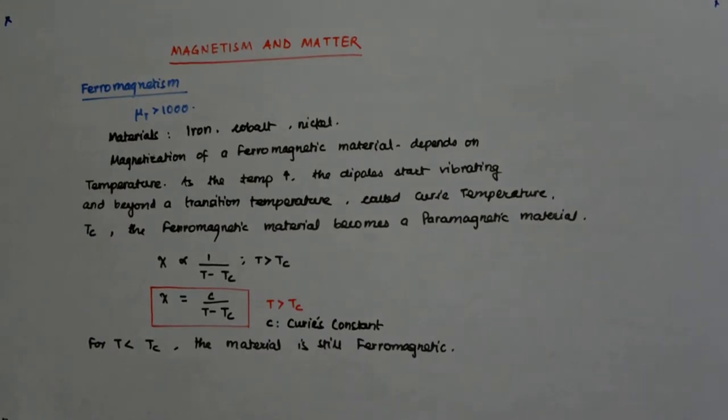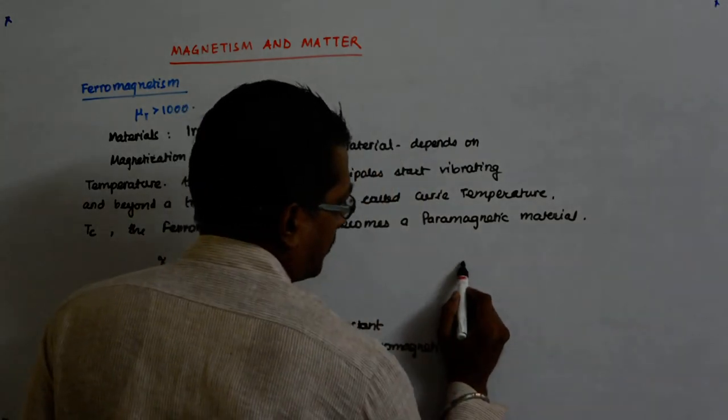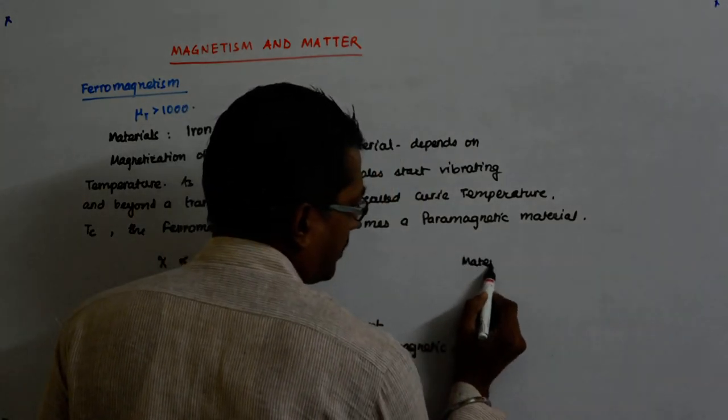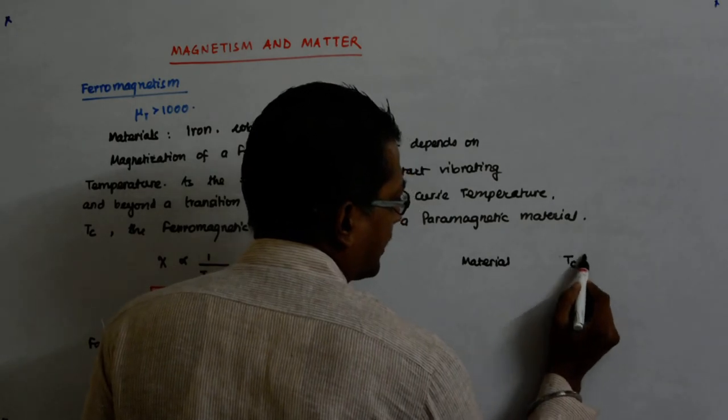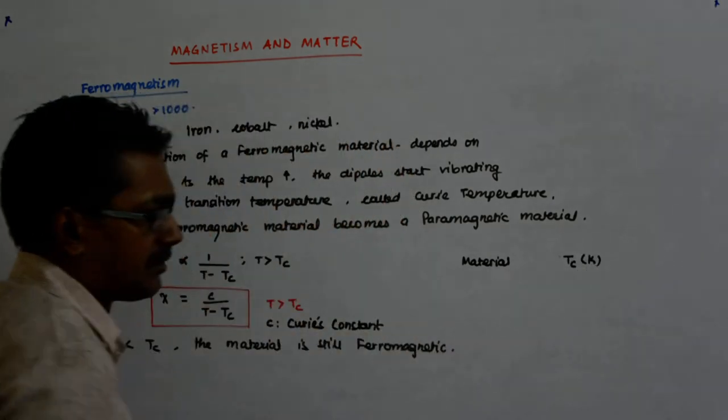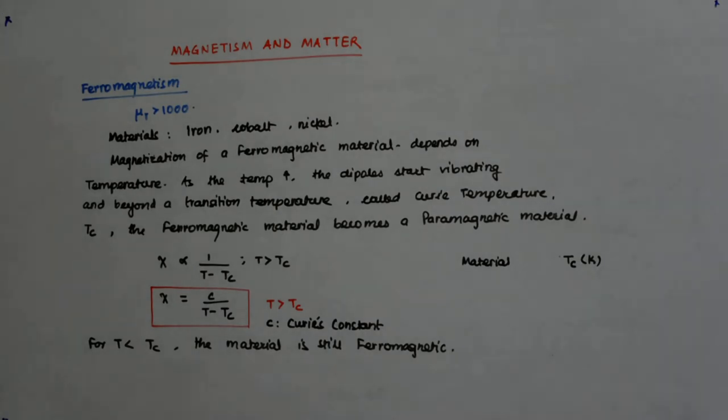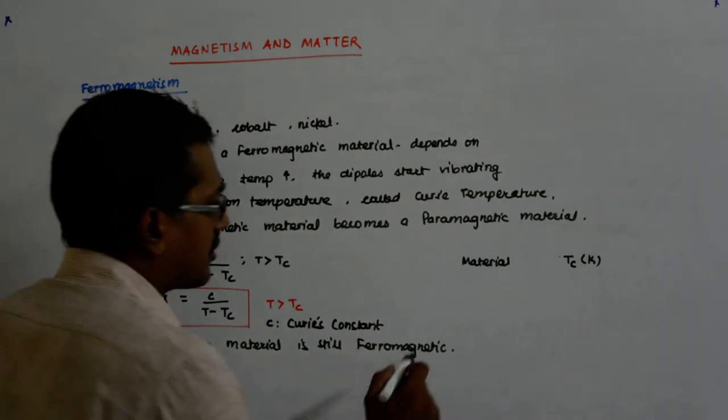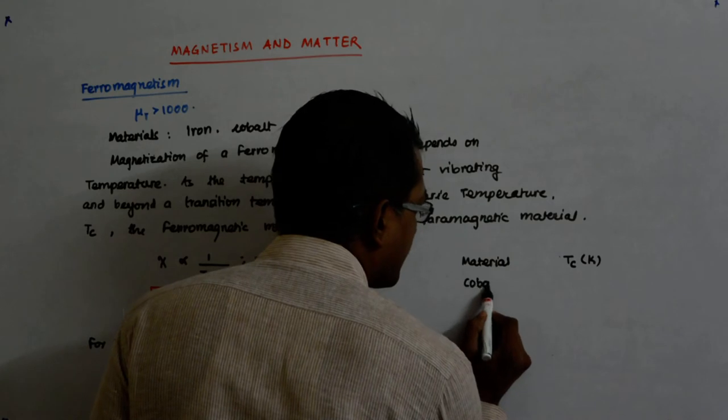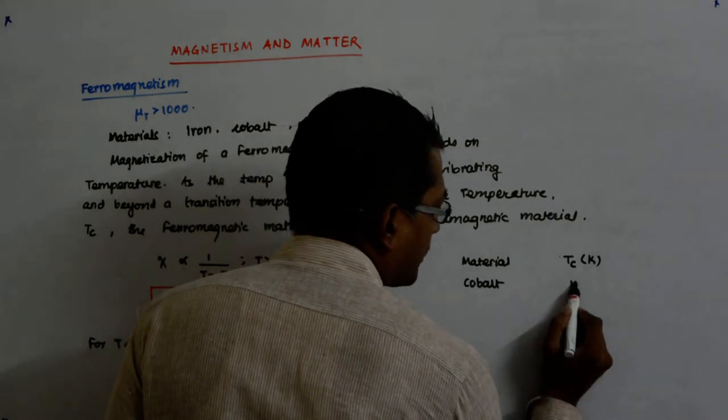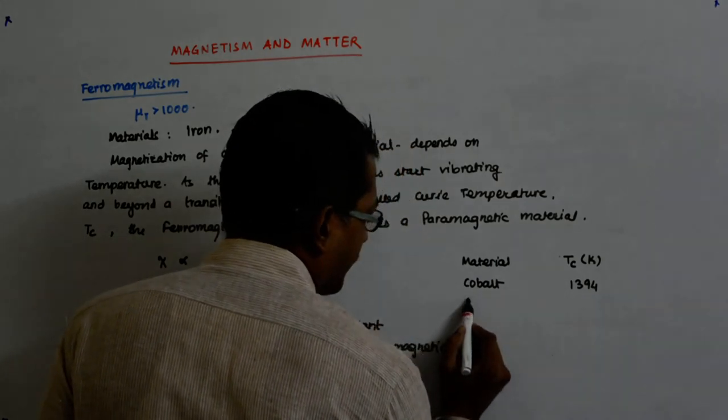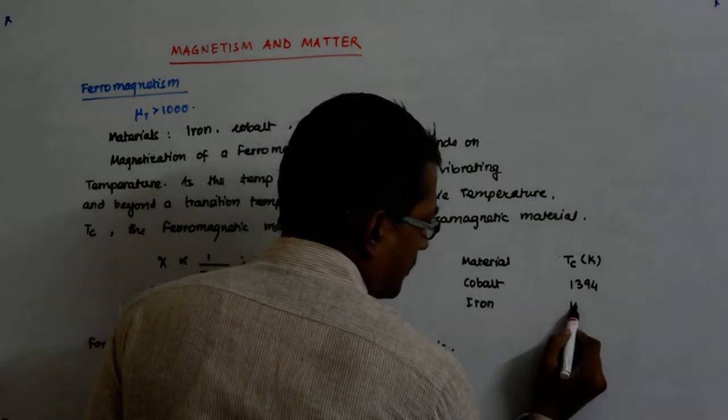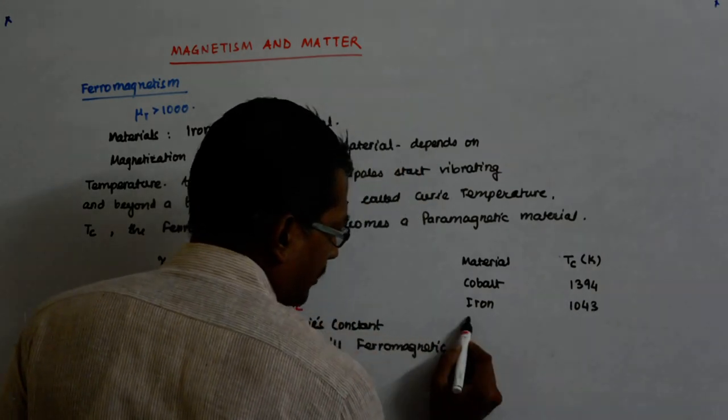The various values of Tc for different materials are: material and Tc in Kelvin. For Cobalt it is how much? 1394. And for Iron it is 1043 in Kelvin.